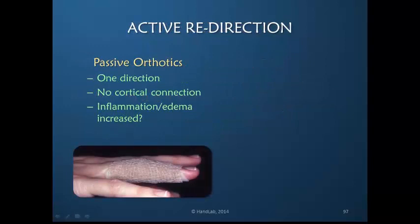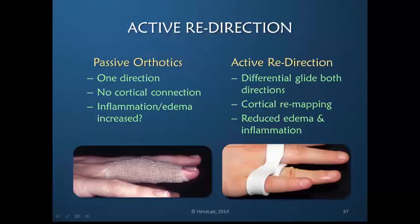If we compare our passive orthosis, what do we get? We get one direction, no cortical connection, and we may increase inflammation or edema depending on the construct, the length of time, the amount of force, and other variables. With active redirection, we get differential glide in both directions, cortical remapping, bringing alive the muscles that have been suppressed by the maladaptive pattern, and this normal balanced motion reduces edema and decreases inflammation. It allows the rebalancing to occur naturally.